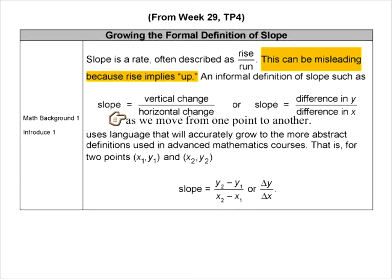Using a more accurate and formal definition of slope such as vertical change over horizontal change instead of rise over run will probably help diffuse the misconception. As we move from one point to another.